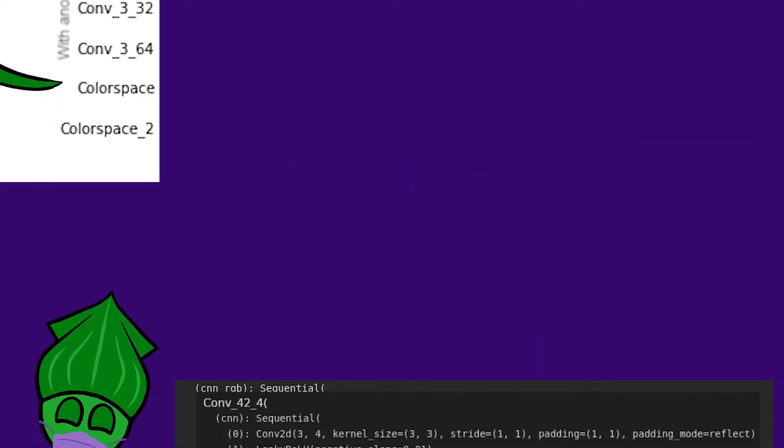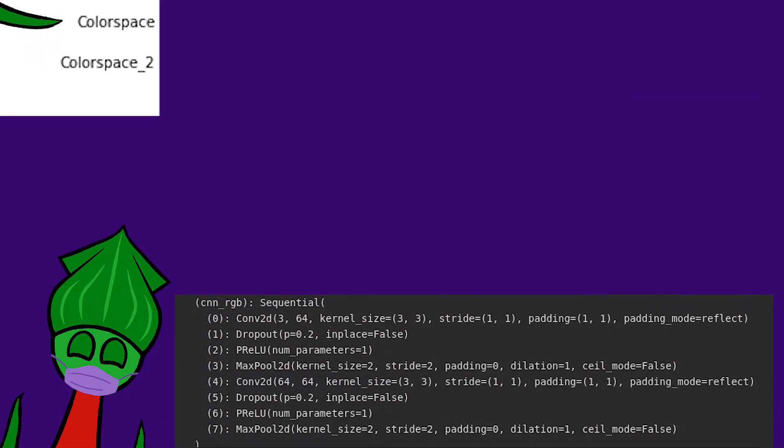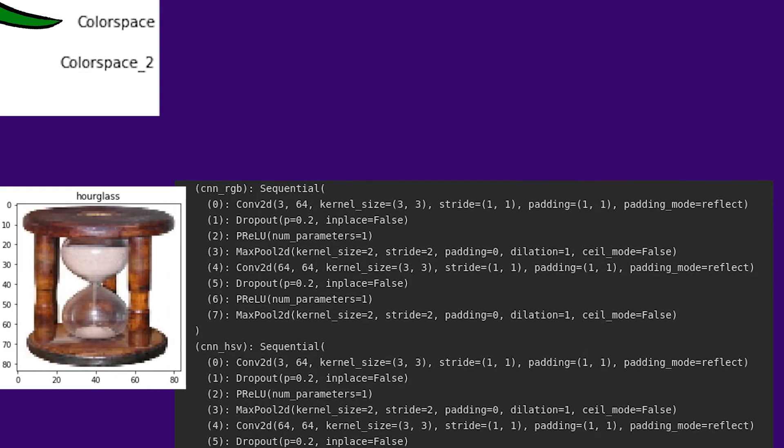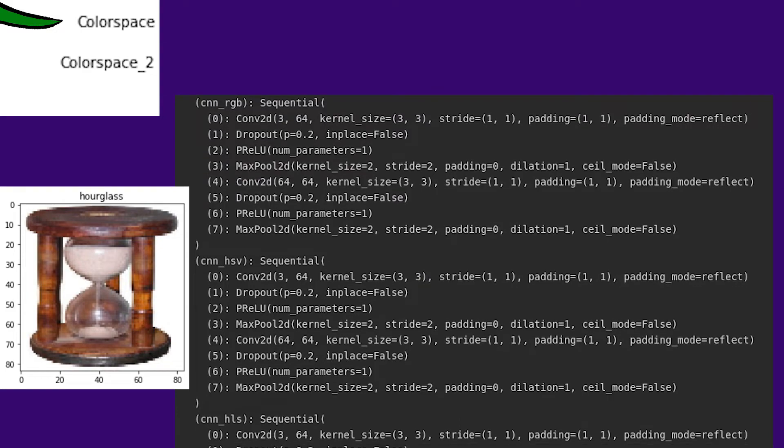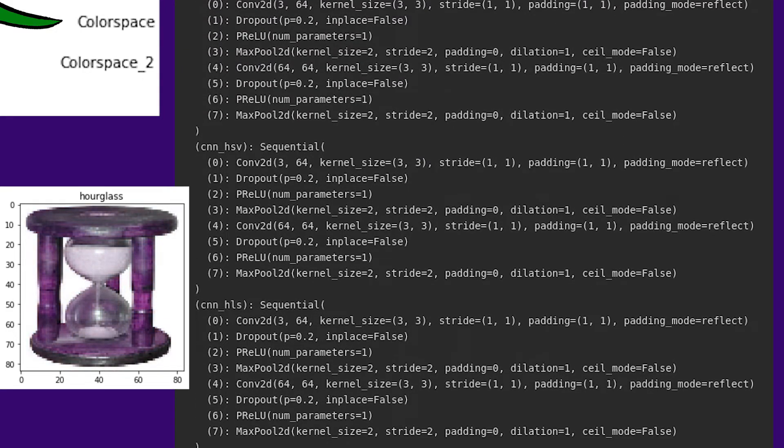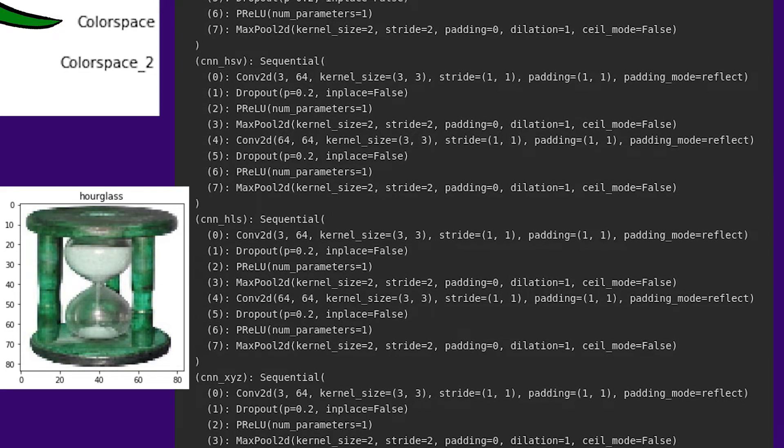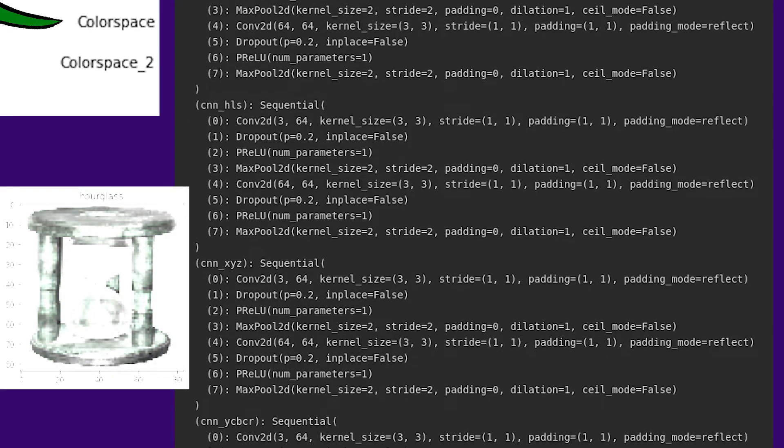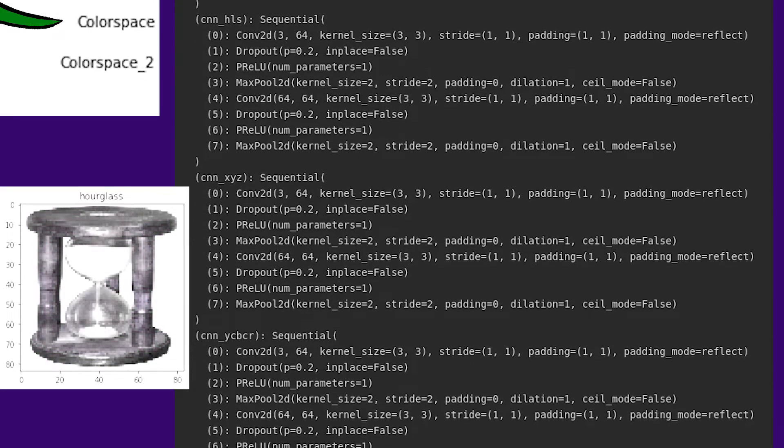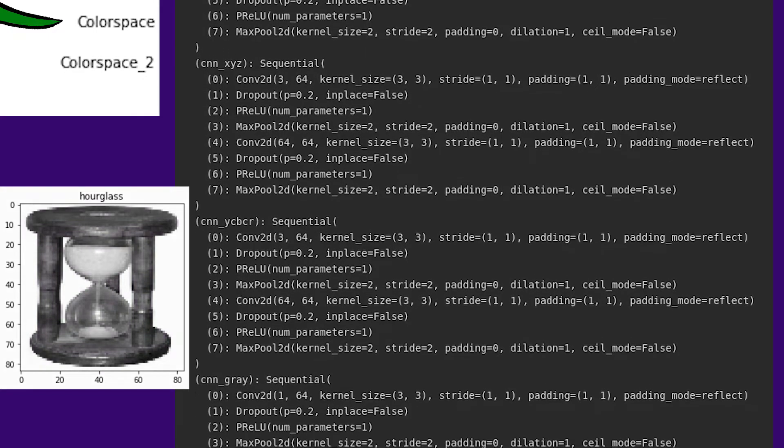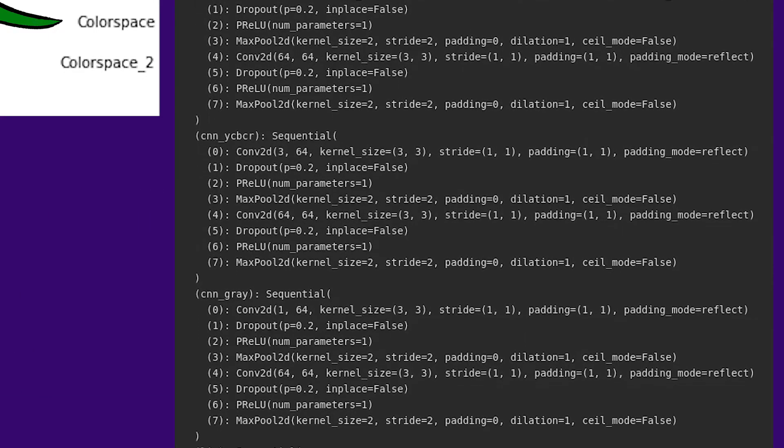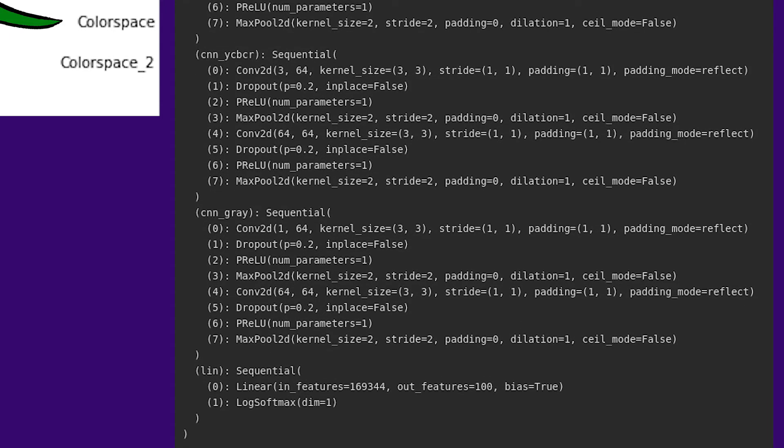The last two models, I basically threw everything at them I could, complex as can be. The 84x84 red-green-blue input is converted to other color spaces, hue-saturation value, hue-light-saturation, XYZ, YCbCr, and grayscale. All six color spaces each have their own two layers of convolution. They're flattened, stitched together, and that is made into the 100 probabilities for the model's label. I call that model color space. Color space 2 is the same model with extra-linear layers.